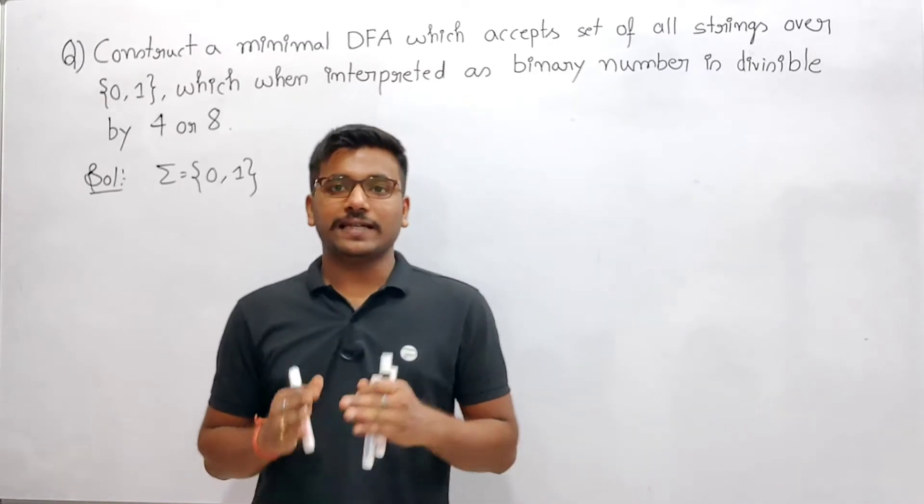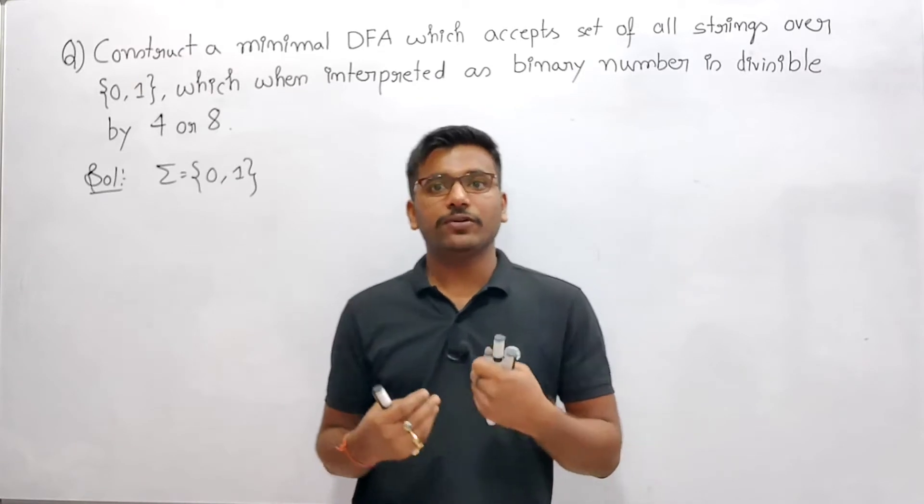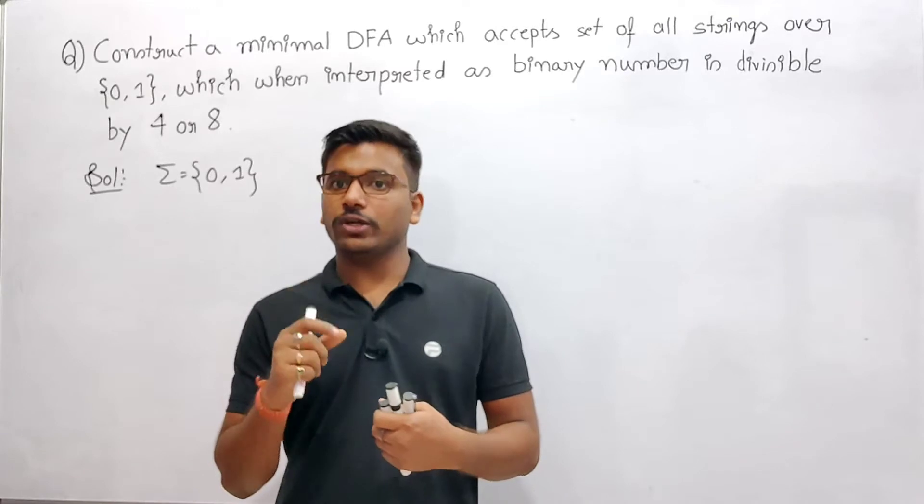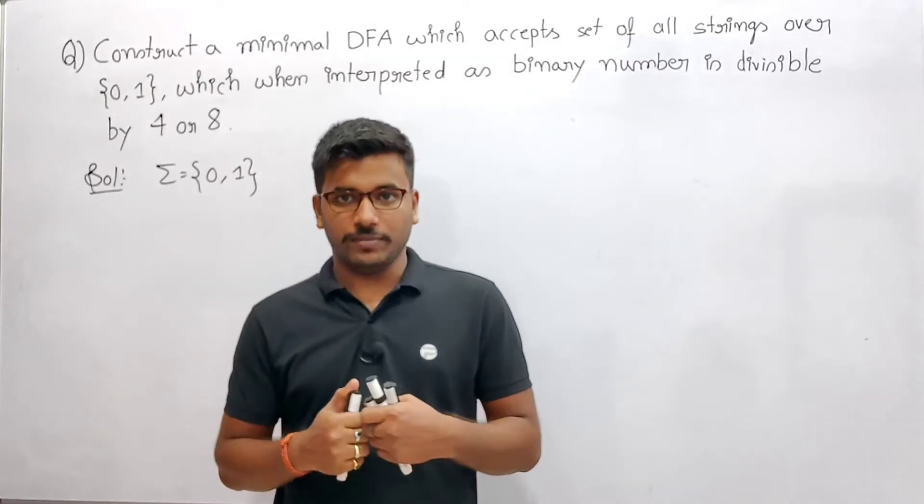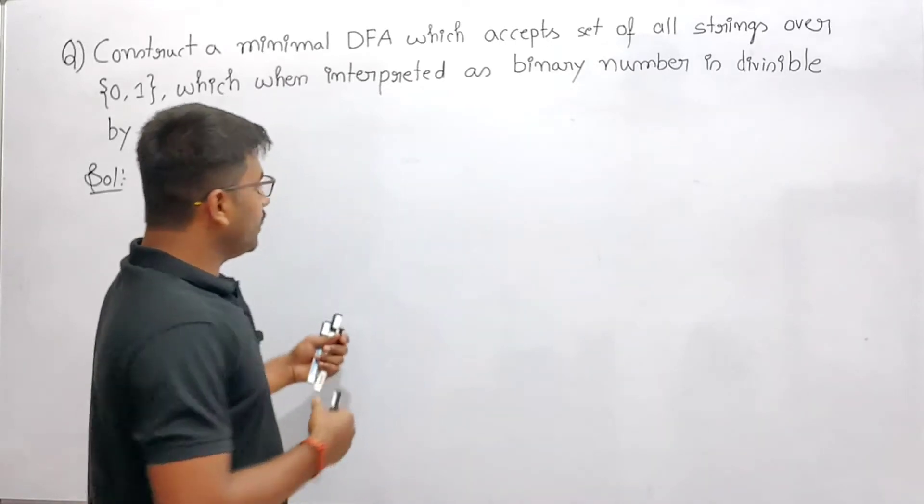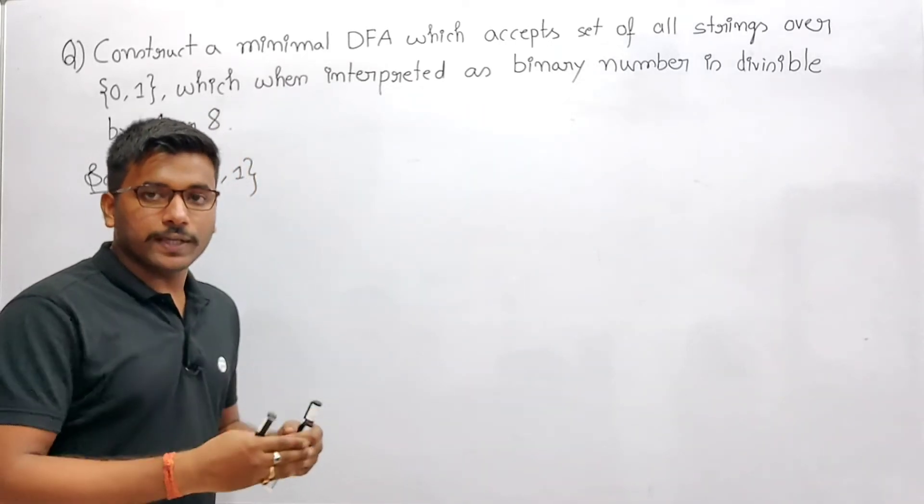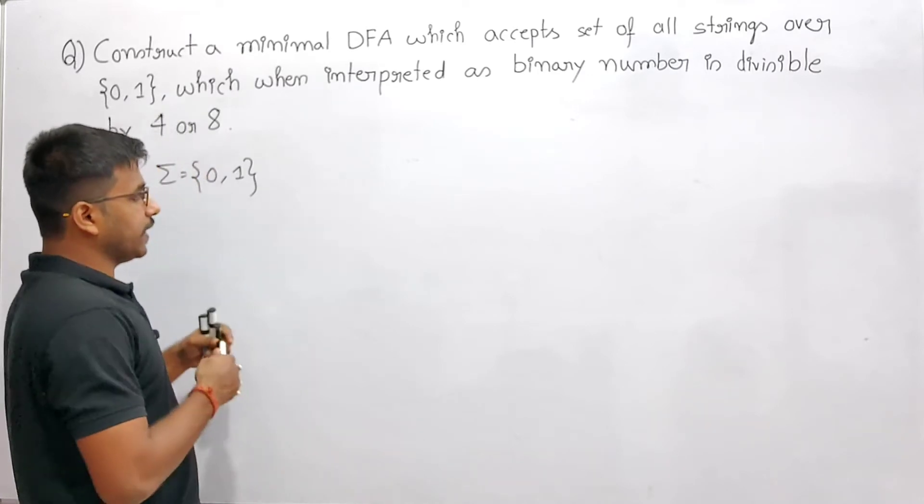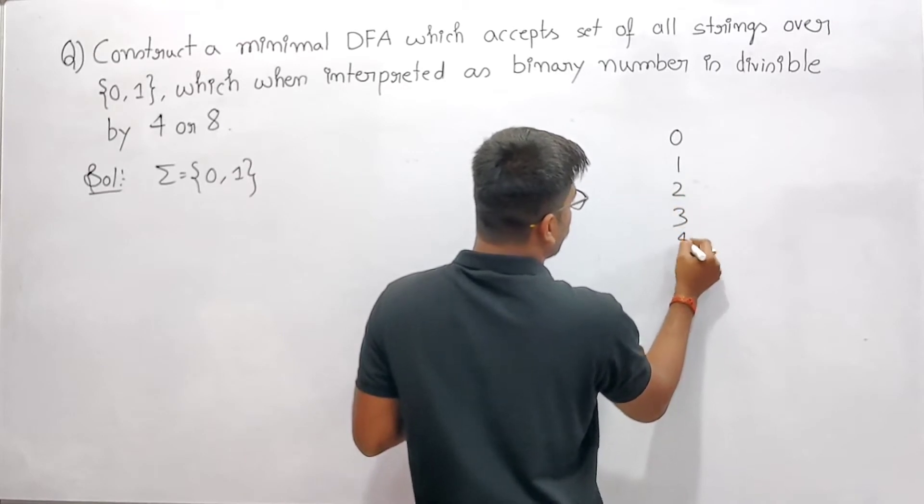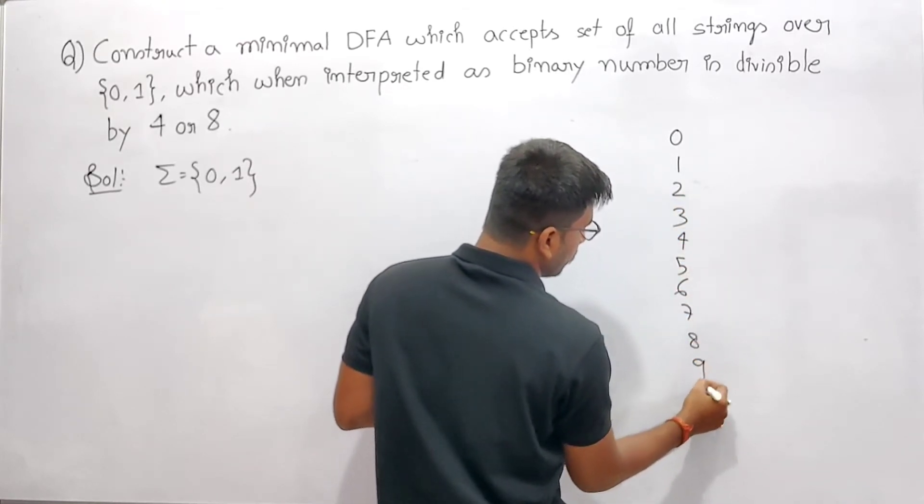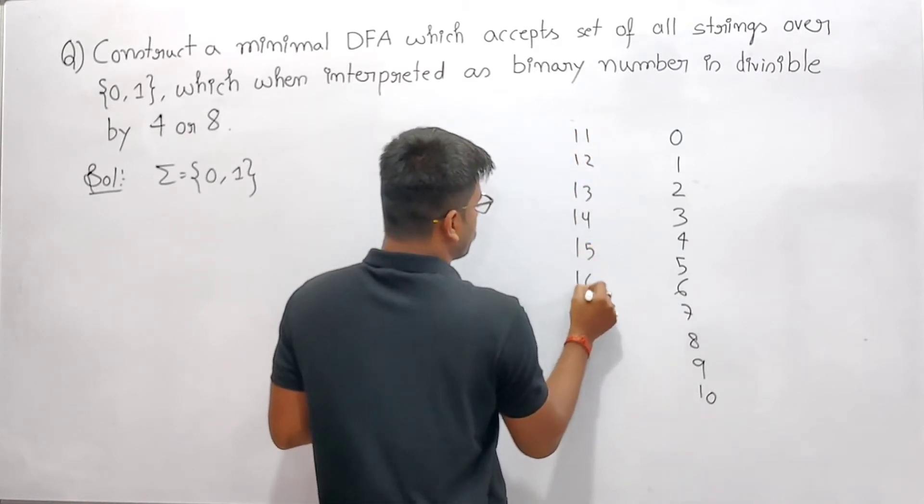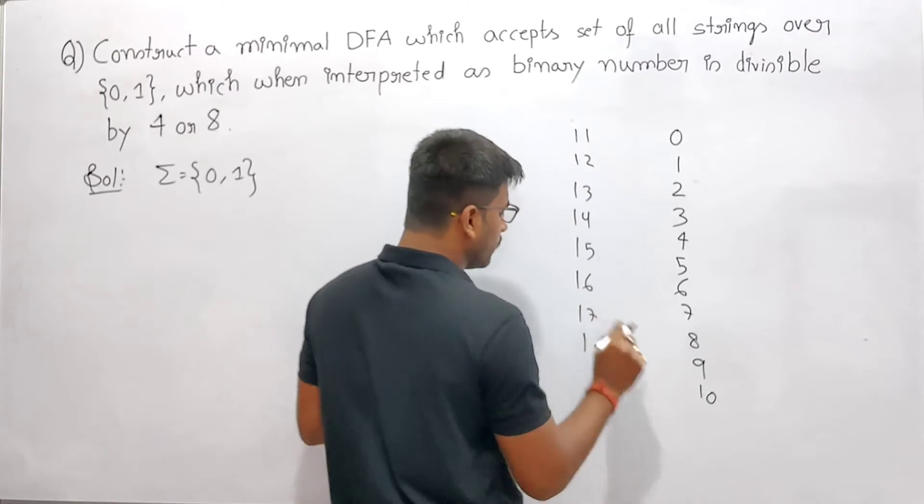Now the general mistake that students make: since they see that every time I need to do the LCM of these two numbers, and that's going to be the number of states in the minimal DFA. But if you see the numbers 4 or 8, the numbers which are divisible by 4... Let me list the numbers: 0, 1, 2, 3, 4, 5, 6, 7, 8, 9, 10, 11, 12, 13, 15, 16, 17. Till now I'm taking this.